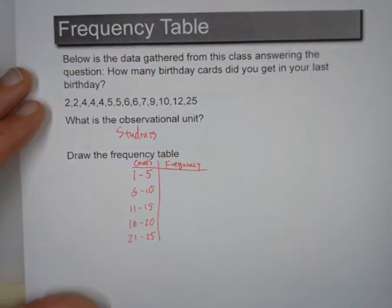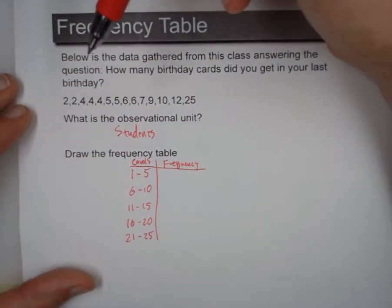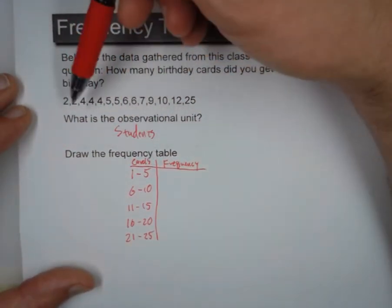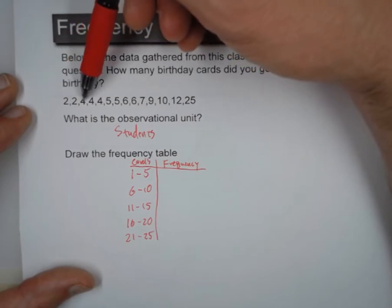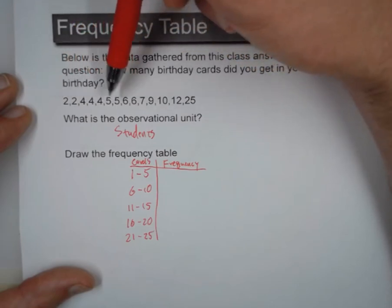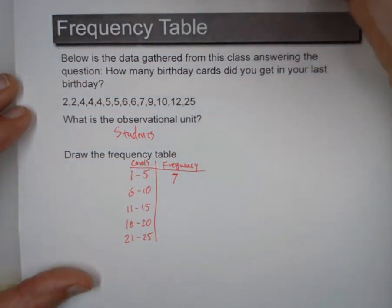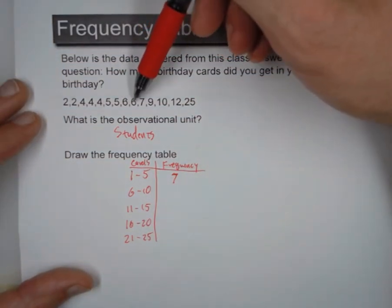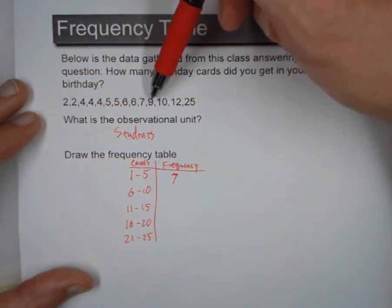Now I'm not going to do the tally column, because I can just count them right here in front of you. So let's see, how many are there from 1 to 5? 1, 2, 3, 4, 5, 6, 7. So that's a frequency of 7. Next one: 1, 2, 3, 4, 5.